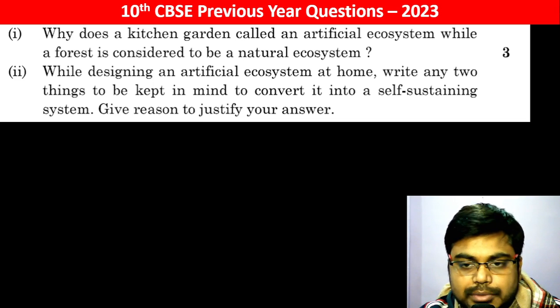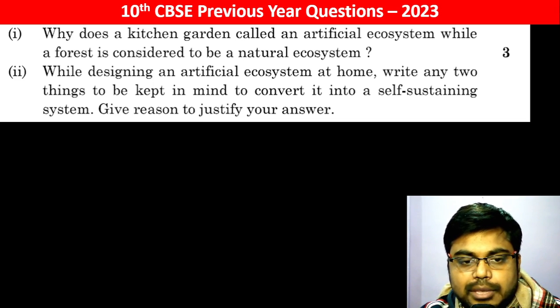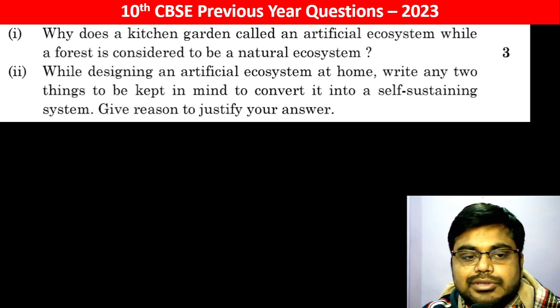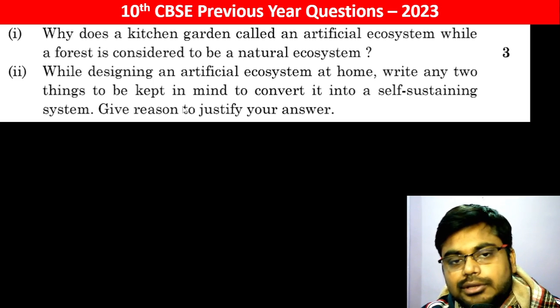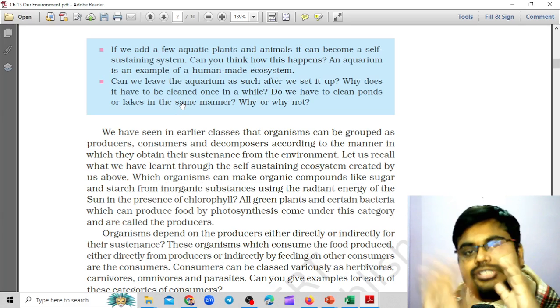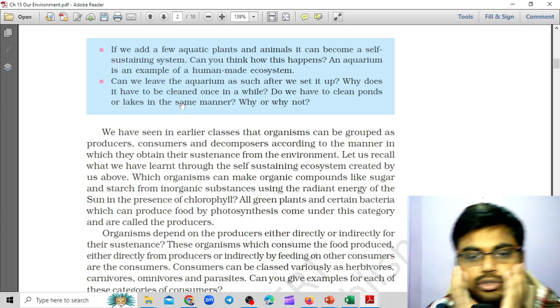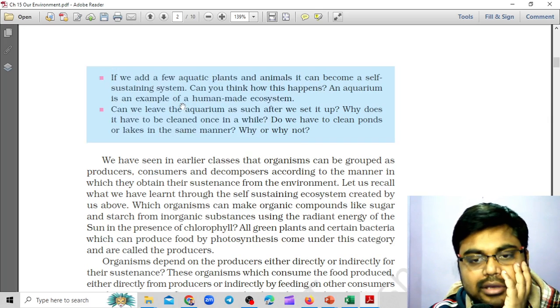While designing an artificial ecosystem at home, write any two things to be kept in mind to convert it into a self-sustaining system. Give reason to justify your answer. Self-sustaining system - it can sustain on its own. So here, NCERT activity is the main focus.